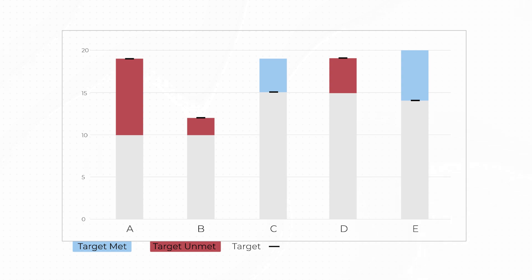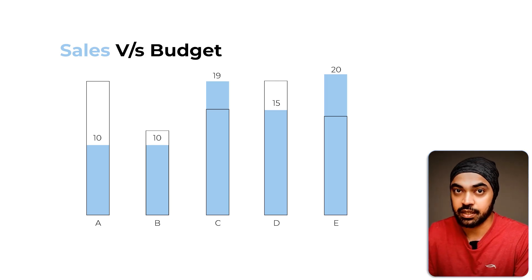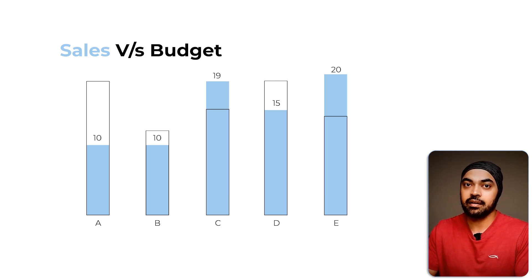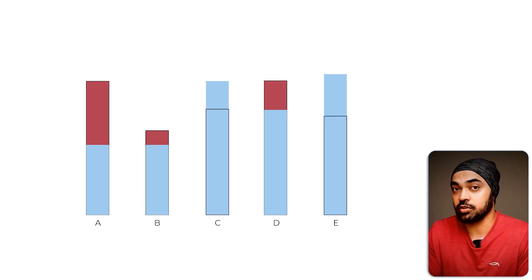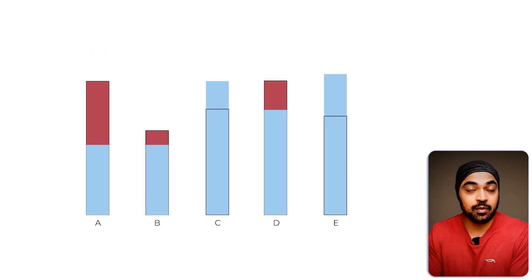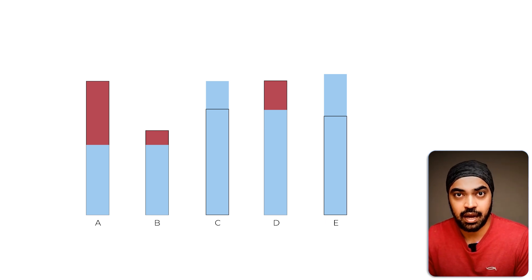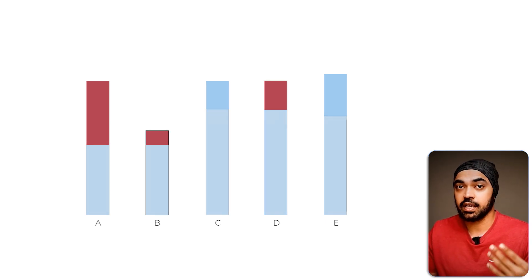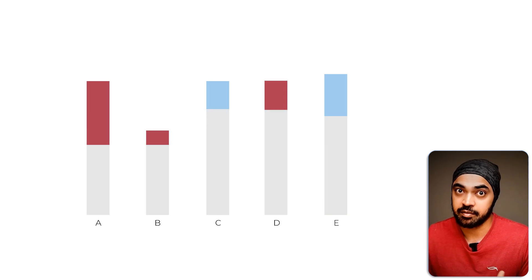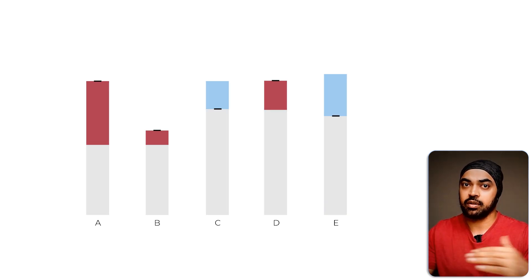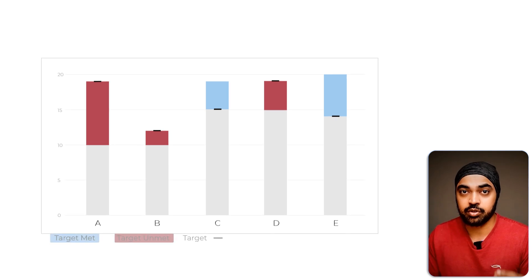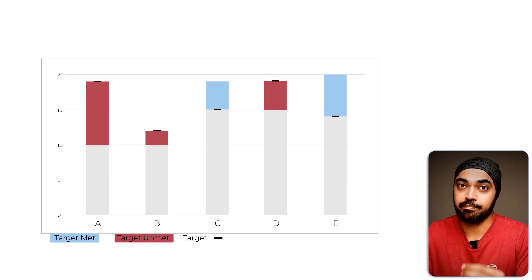Moving on to option number two: if you want to add more flair, we can color the empty portion of the chart in red to highlight the missed target. Anything popping off in blue above the target is our surplus or overachievement. The target itself becomes a straight line, making a very interesting and impactful chart.